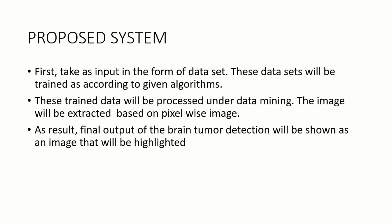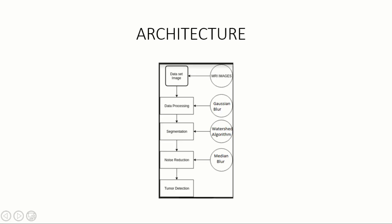In the proposed system, first we take MRA scan images as input in the form of a dataset. These datasets will be trained according to the given algorithms. The trained data will be processed under data mining. The image will be extracted based on pixel-wise image. As a result, the final output will be a brain tumor detection shown as a highlighted image. The tumor can be detected using algorithms and the process can be completed.